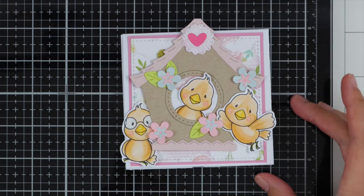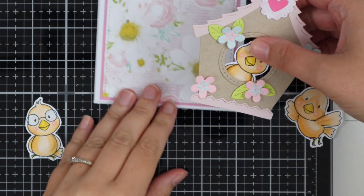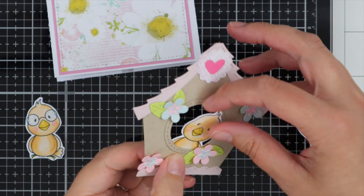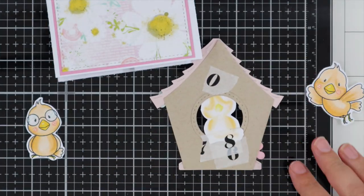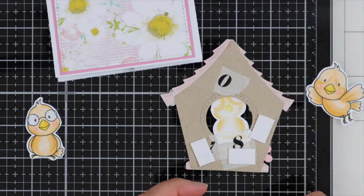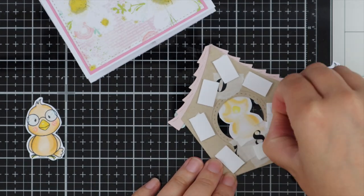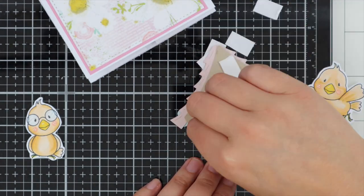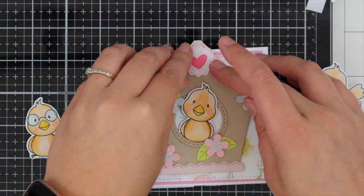I've used Y15 and Y17 for the little beak, and if you want rosy red cheeks, I've used R20. Now all my images are colored, I'm adhering all my pieces to the front of the card. I've secured that little chick down with washi tape and I'm applying 3D foam pads to the back of the birdhouse.